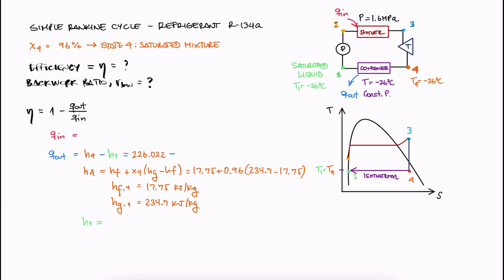For state 1, since we know it should be a saturated liquid, H1 is just the HF value at that temperature. This all gives us Q_out.